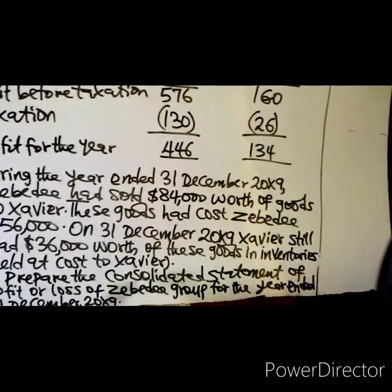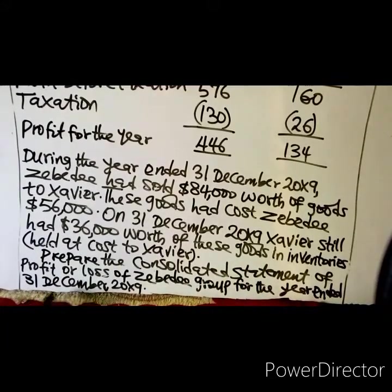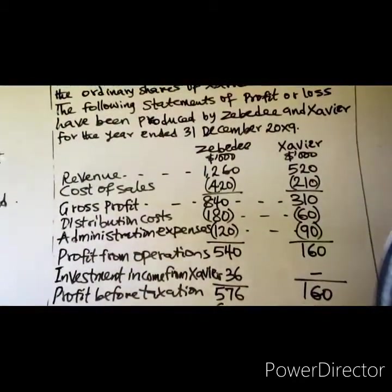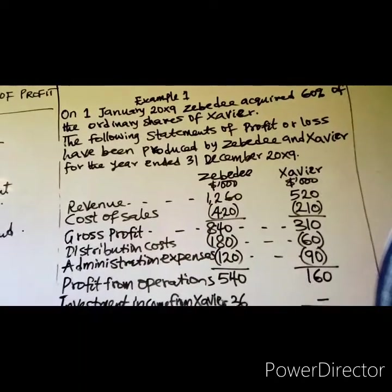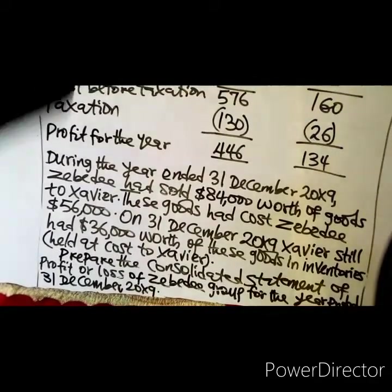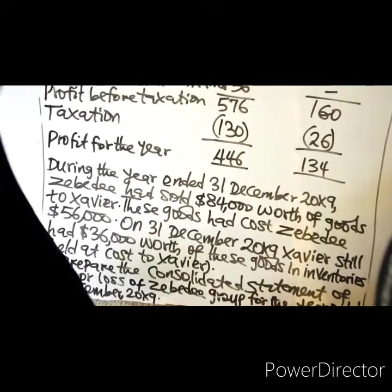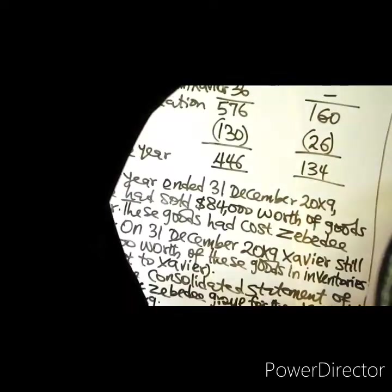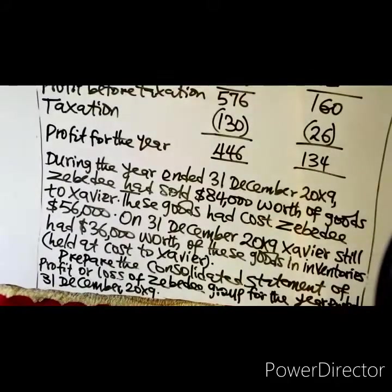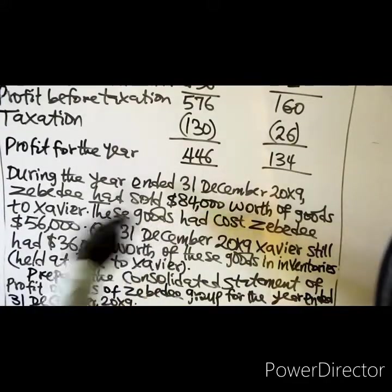We are required to prepare the consolidated statement of profit or loss of the ZBD Group for the year ended 31st December 20X9. When preparing it, you add line by line the individual items in the parent's and subsidiary's financial statements, after eliminating intergroup items.